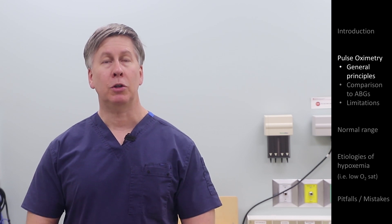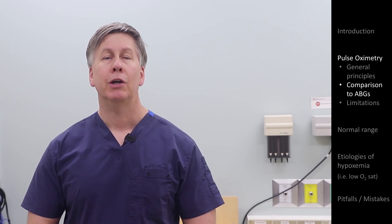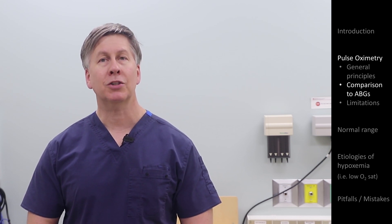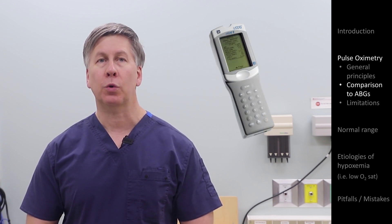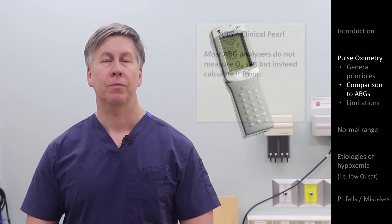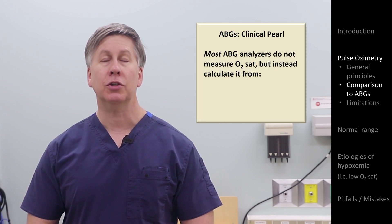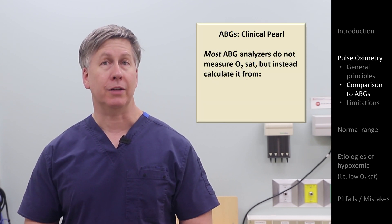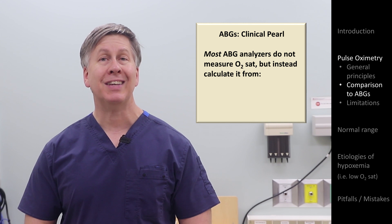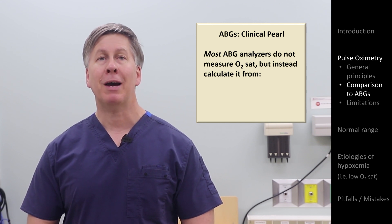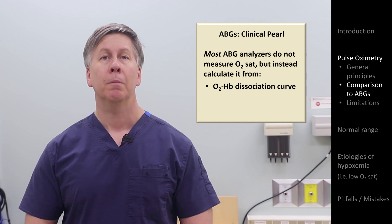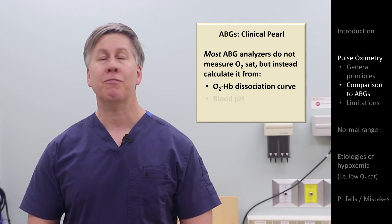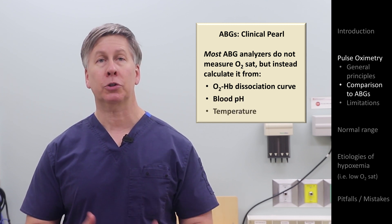The other methods that can be used to determine O2 sat require a blood sample to be run through a machine called an ABG analyzer, where the acronym ABG stands for arterial blood gas. Most ABG analyzers don't actually measure O2 sat, but instead calculate it from a mathematical description of the oxygen-hemoglobin dissociation curve, incorporating the effects of things like the blood's pH and temperature.